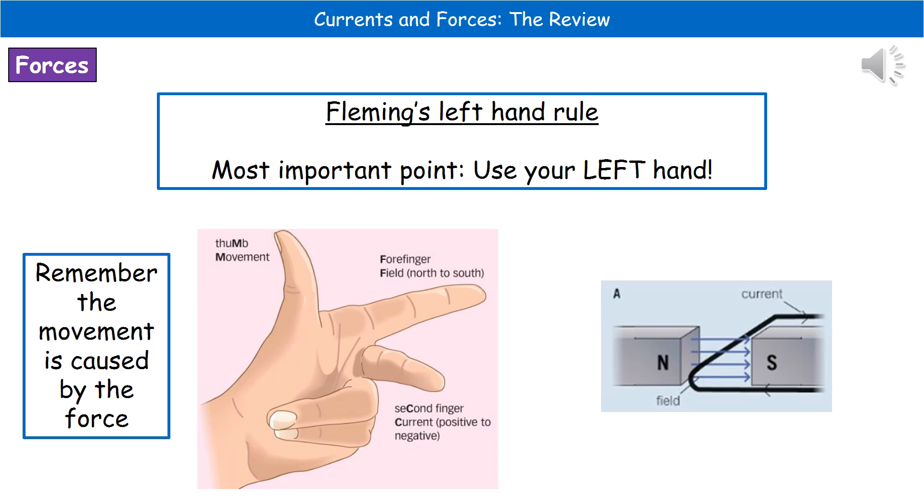Once you've got that, you're going to line up your first finger, which represents the field pointing from north to south. So you line that up with the direction of the actual magnets going from north to south. Then your second finger has to be in line with the current going from positive to negative. So look at the direction that the arrows are going and point your fingers in that orientation. This is where you might have to flip your hand upside down, so have a practice at this before the exams.